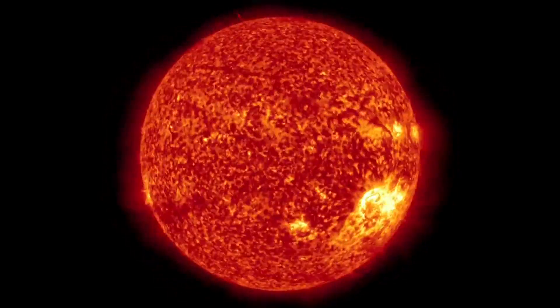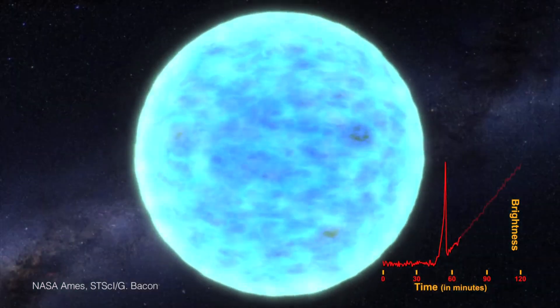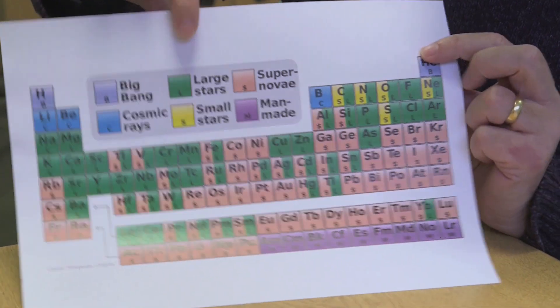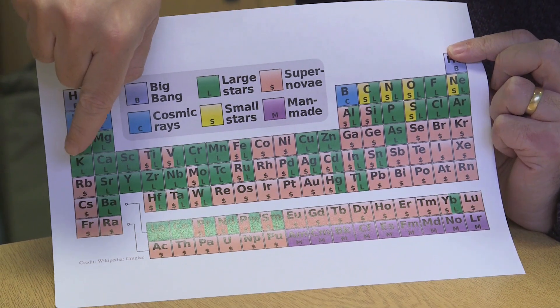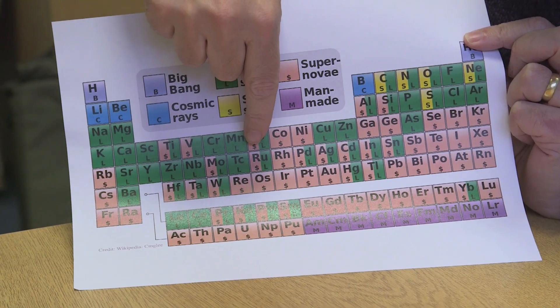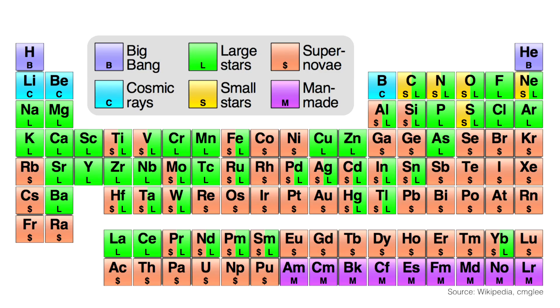Everything heavier than iron only gets made in supernovae. Because when a star explodes, there's lots of energy around and you can have these very inefficient processes — you're not trying to power a star anymore, so you can smack things together and create heavier elements. Gold and all the heavier things get made in supernovae. Looking at the periodic table graphic, the green and yellow represent stuff made in stars, and the lighter elements tend to be green until we get to about iron, then they turn to a pinky-orange colour representing supernovae. So the more massive elements tend to get made in supernovae.